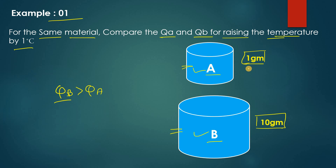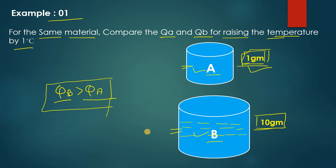Why? Because for block A you have to increase the temperature of one gram of water by one degree Celsius, so you will require less heat compared to block B, where there is ten grams of water and you have to raise the temperature by one degree Celsius. So what we can say is: if the mass is higher, the amount of heat required will be more.